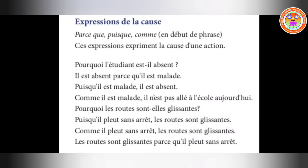Next one is puisque. Puisque is a subordinating conjunction. Parce que introduces a cause or reason unknown to a person, but puisque is a subordinating conjunction and can begin a sentence always. Puisque gives an obvious explanation or justification rather than a cause. Puisque implies that the fact is already known or very obvious, whereas parce que is unknown.